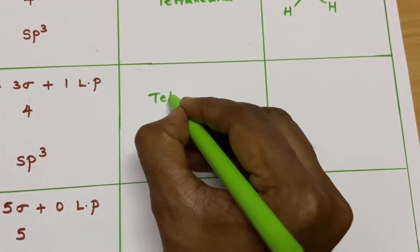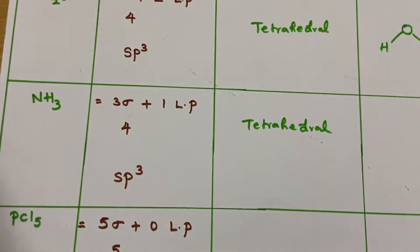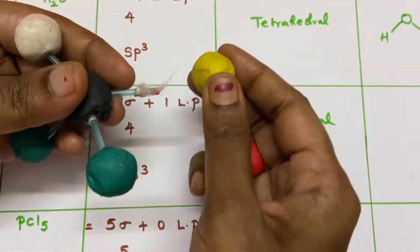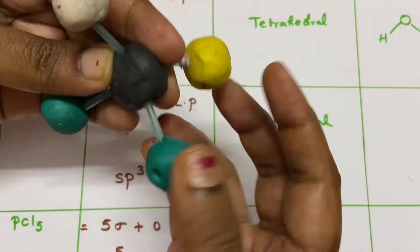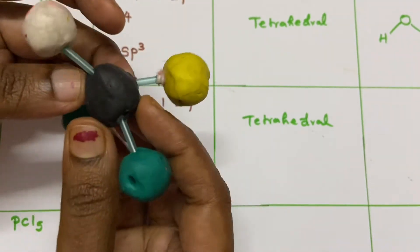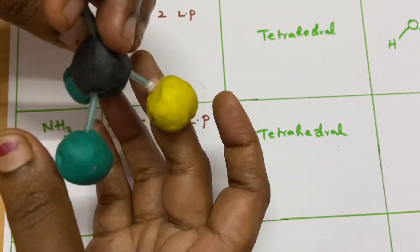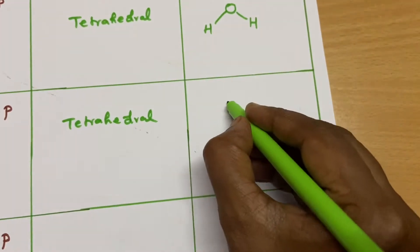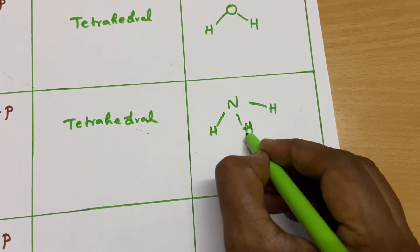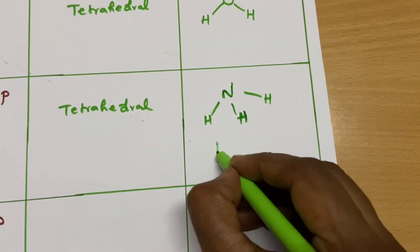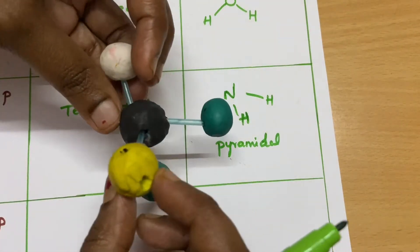In ammonia, you have only one lone pair. The geometry is tetrahedral. While deriving the shape, you have to ignore the lone pair and see — it looks like a pyramid. It is a pyramidal shape. The nitrogen atom with three bonded atoms below and one lone pair ignored. That is how you got the pyramidal shape.